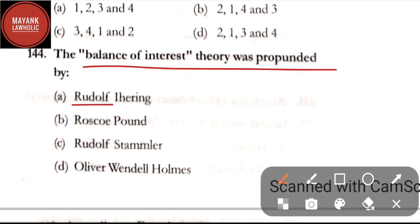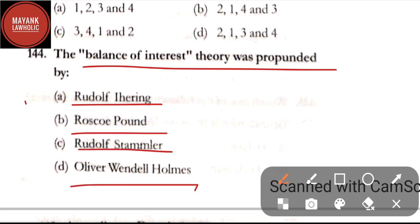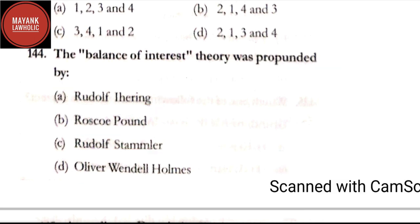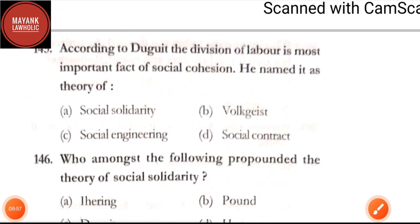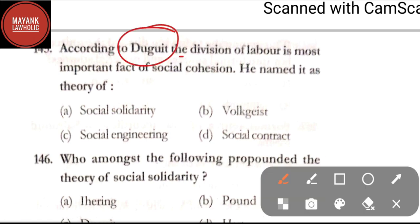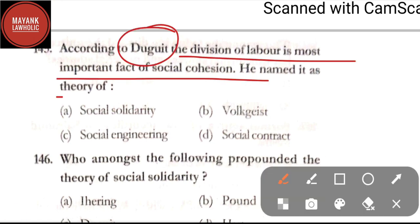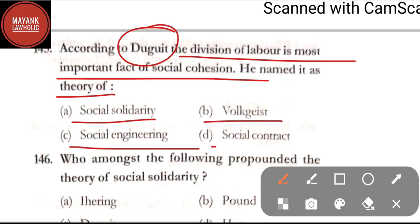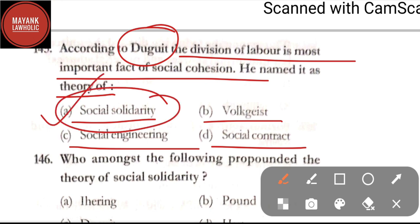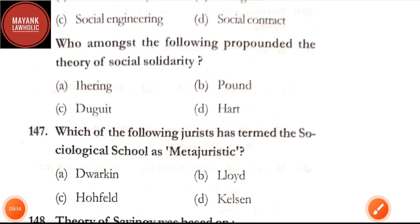Question number 144: the balance of interest theory was propounded by — option A: Rudolph Ihering; option B: Roscoe Pound; option C: Rudolph Stammler; option D: Oliver Wendell Holmes. The correct answer is option A, Rudolph Ihering, who was the propounder of the theory of balance of interest. Question number 145: according to Duguit, the division of labor is the most important fact of social cohesion — he named it as — social solidarity, Volksgeist, social engineering, or social contract. The correct answer is option A, social solidarity.